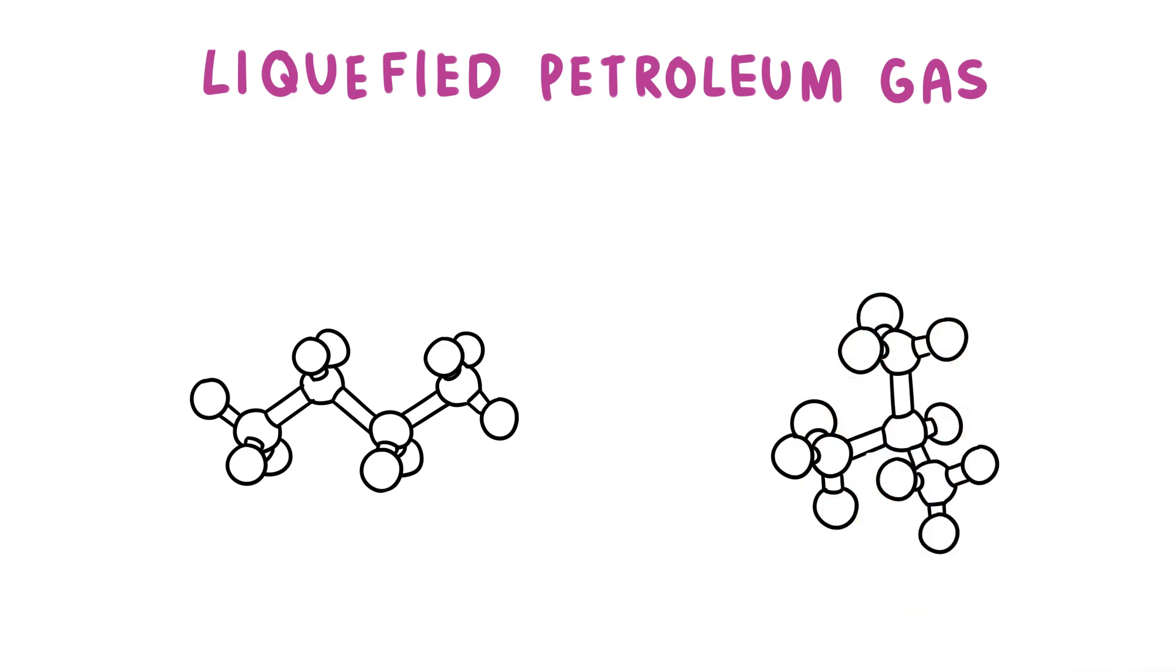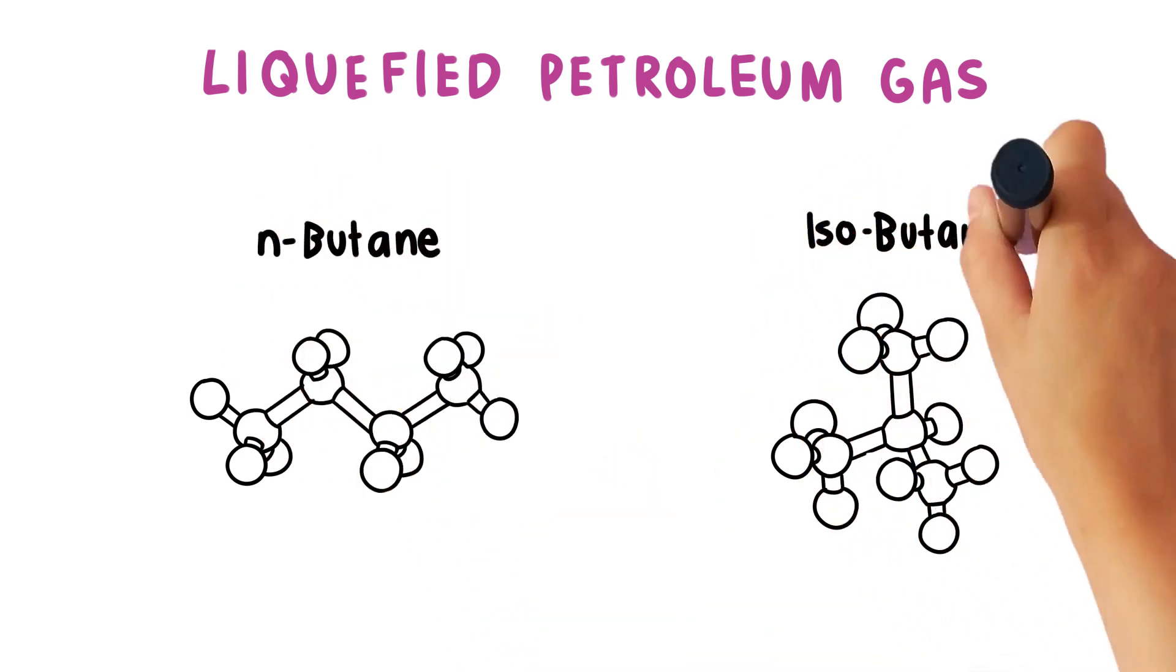As a colorless, inflammable gas, the different types of LPG, such as n-butane, isobutane, and their mixtures, are easily condensable under pressure and have a characteristic odor.